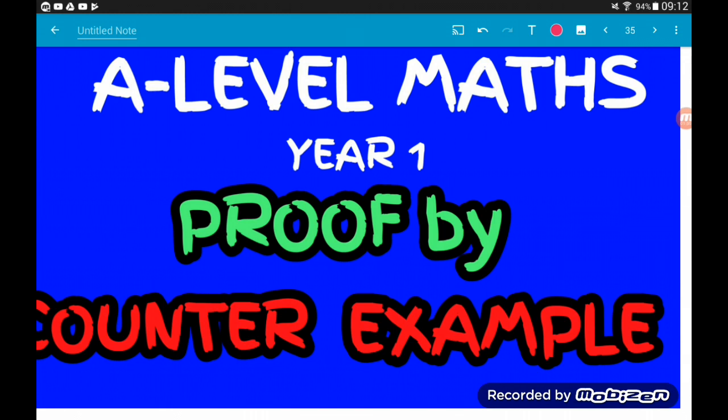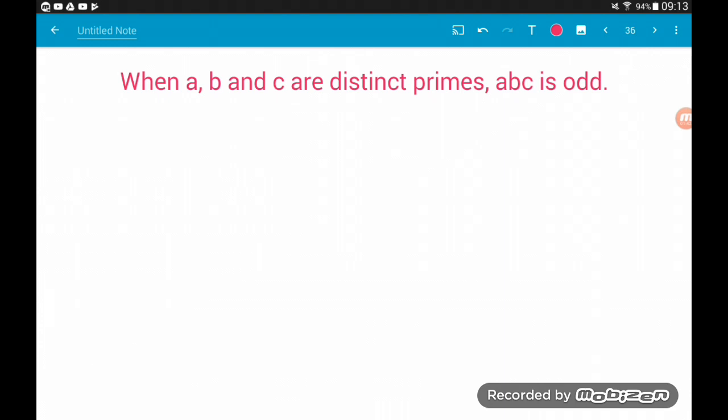Okay, so the first conjecture: when a, b, and c are distinct primes - now distinct primes simply means they are different - then abc is odd. This seems pretty plausible. Prime numbers like to be odd. For example, we could have 3 times 5 times 7.